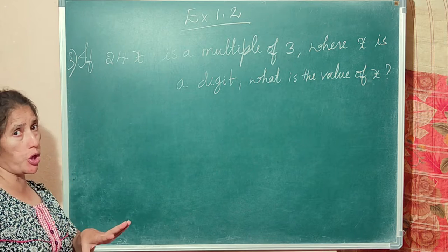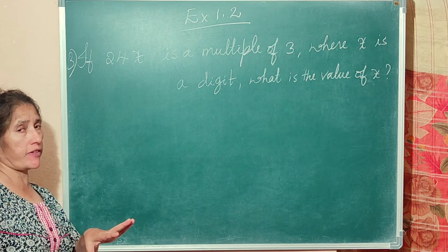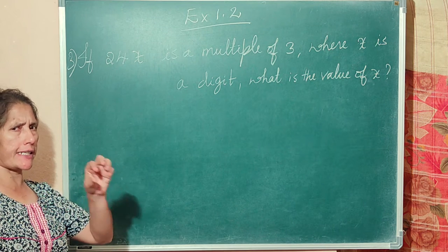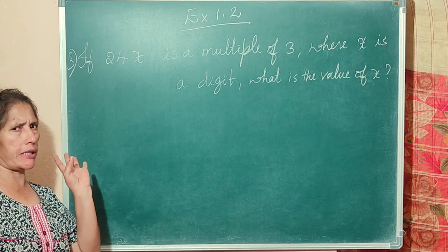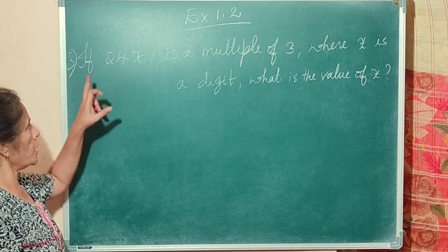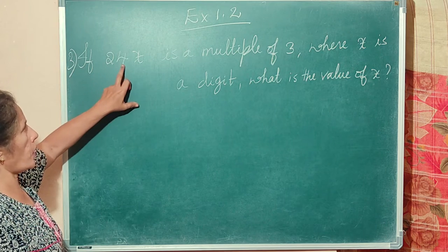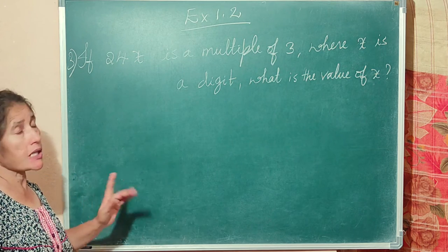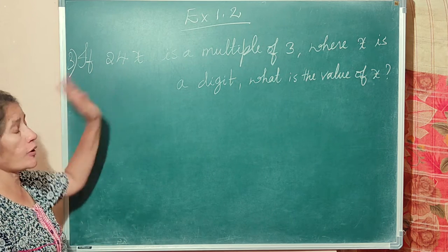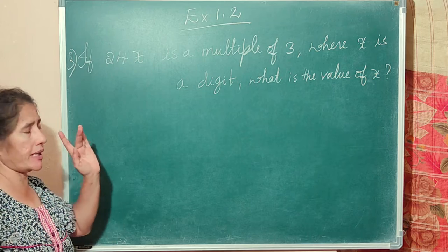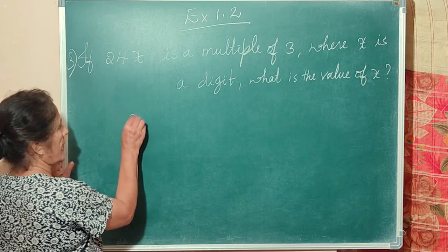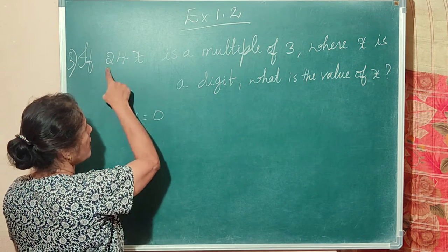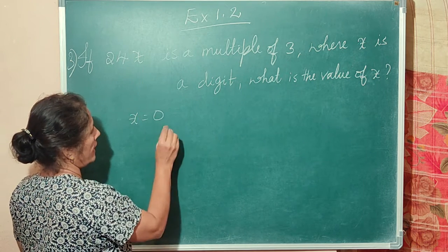We use the test for divisibility of 3: add all the digits and the sum should be a multiple of 3. So 2 plus 4 equals 6 — already a multiple of 3. So x can be 0, which keeps the sum at 6.